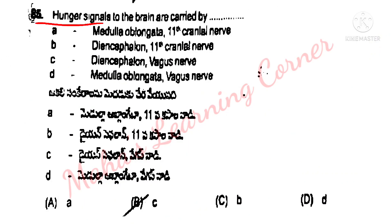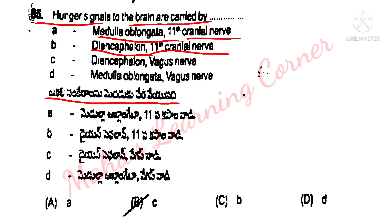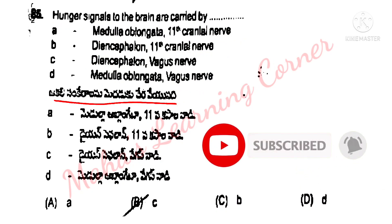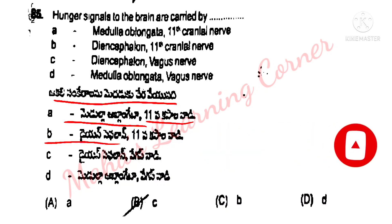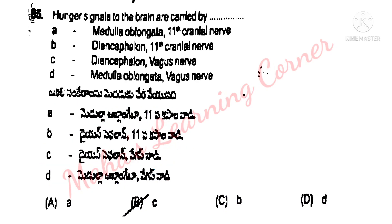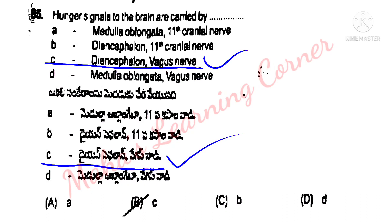Next: Hunger signals to the brain are carried by which structure? Options include: Diencephalon, 11th cranial nerve, Diencephalon 11th cranial, Diencephalon 11th vagus nerve, medulla oblongata vagus nerve. The correct answer is Option B.